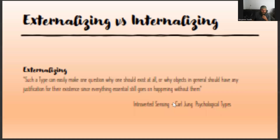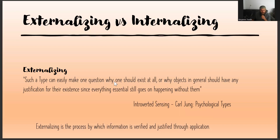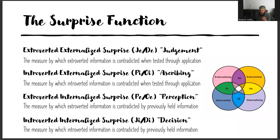Let's just go back to SI here. Such a type can easily make one question why one should exist at all, or why objects in general should have any justification for their existence, since everything essential still goes on happening without them. What's the purpose of this? If it has no purpose, there's no reason to even try it, no purpose to even use it. And that's where you get the tunnel vision. NI is doing this too — it's only seeing things that can advance it towards its goal. It gets that tunnel vision.